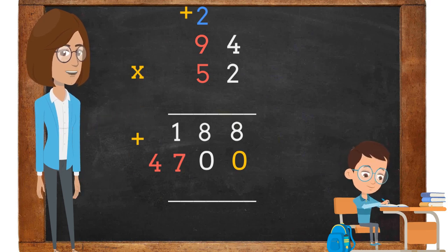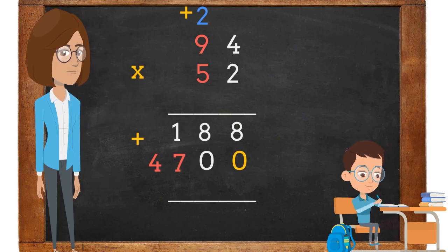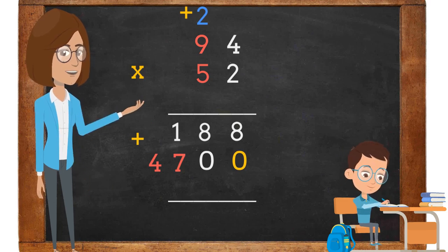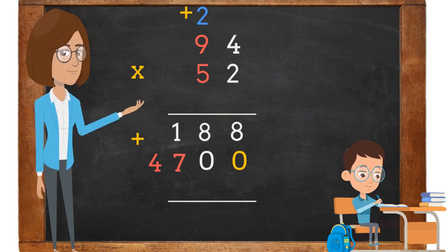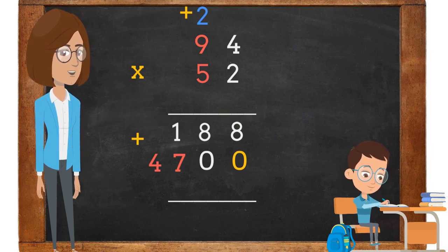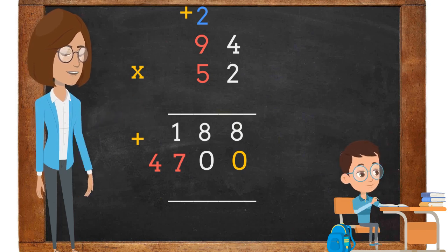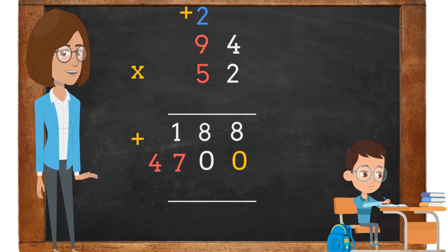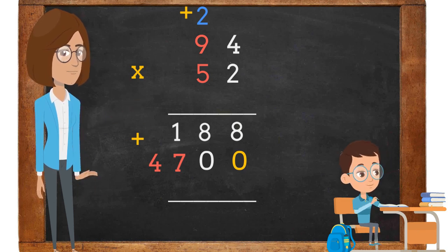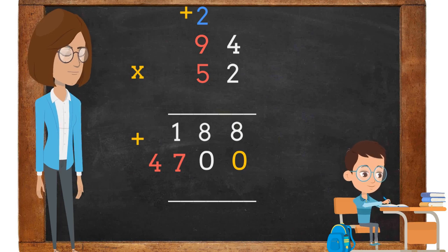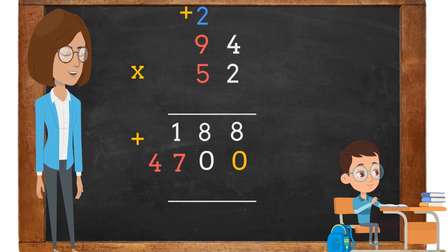Next, we multiply 5 times 9. 5 times 9 is 45. We are going to add the 2 above the 9 to 45. 45 plus 2 is 47. The 7 is placed in the hundreds place and the 4 is placed in the thousands place.